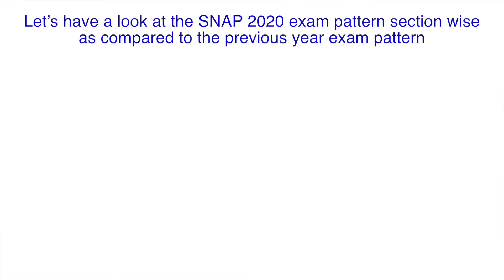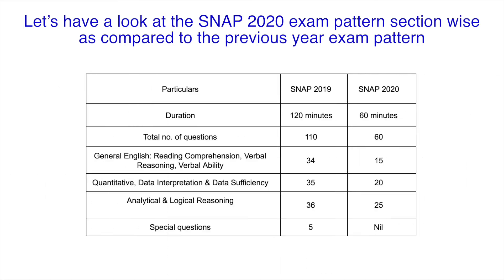Let's have a look at the SNAP 2020 exam pattern section-wise as compared to the previous exam pattern. As we can see, the duration of the exam has been reduced from 120 minutes to 60 minutes. The number of questions has also been reduced from 110 to 60 questions. The number of questions in each section has been reduced, and the special questions have also been removed.